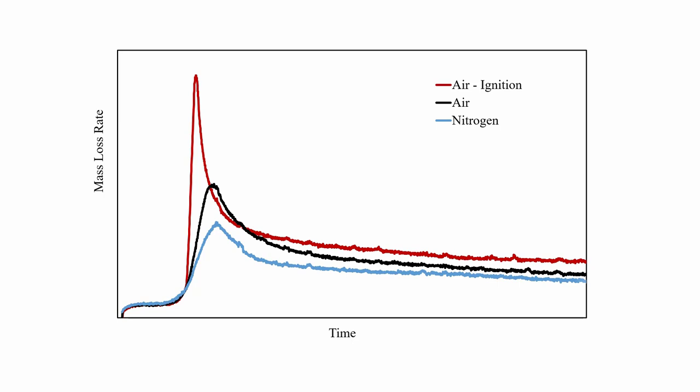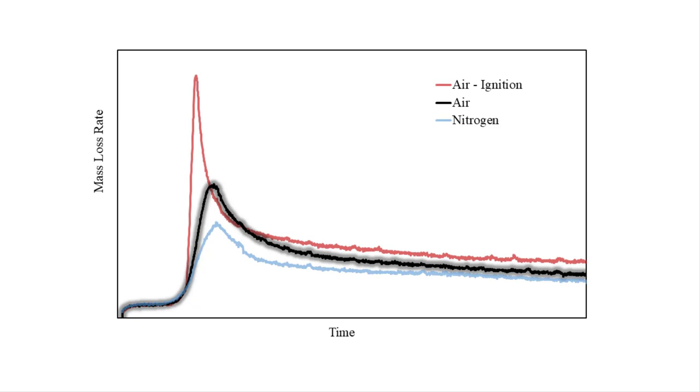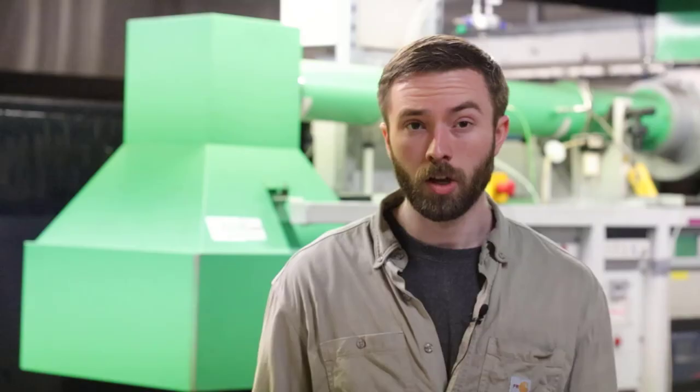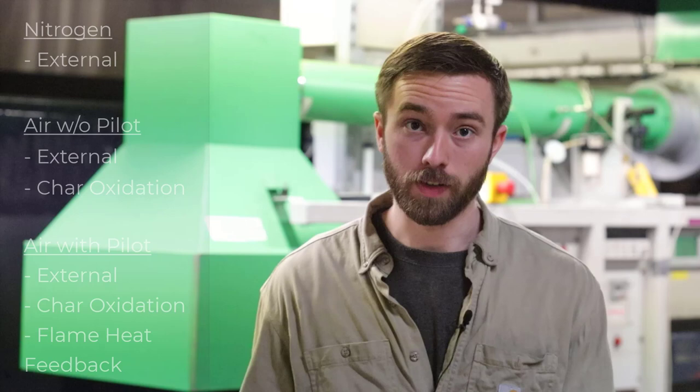The case in which ignition occurs shows a mass loss rate response affected by both char oxidation and flame heat feedback. The case in which samples were exposed in air but without a pilot shows the influence of char oxidation, as indicated by glowing in the char layer, but does not show the effects of flame heat feedback. Samples exposed in nitrogen show only the effects of external heating, with neither flame heat feedback nor char oxidation occurring. By comparing the results of these three configurations, the user can approximate the relative contributions and also the degree to which these contributions vary over the duration of the experiment.